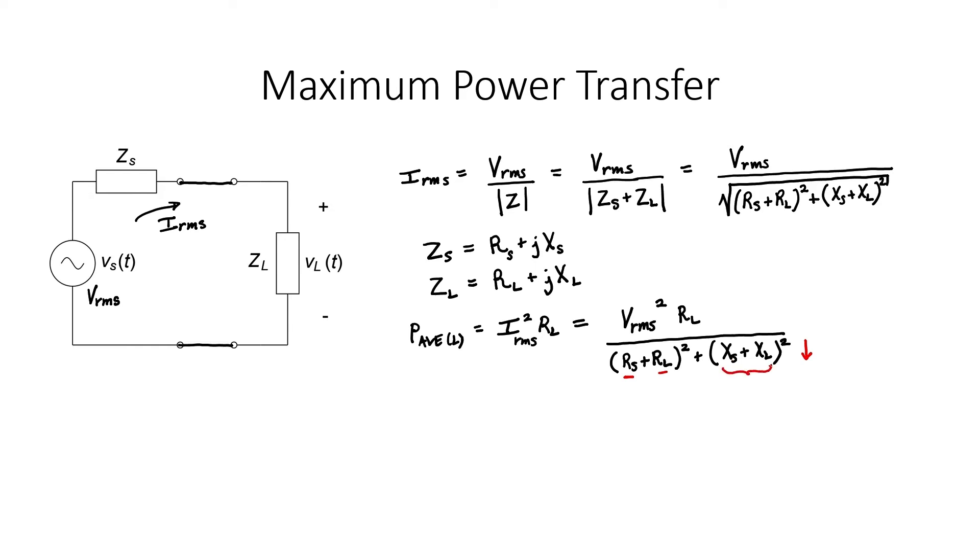However, if we look over here at the reactance, we know that it is possible for this sum to be zero. That happens when XL equals negative X sub S.